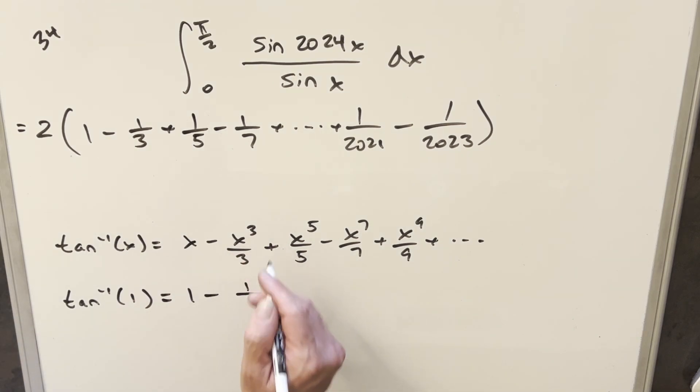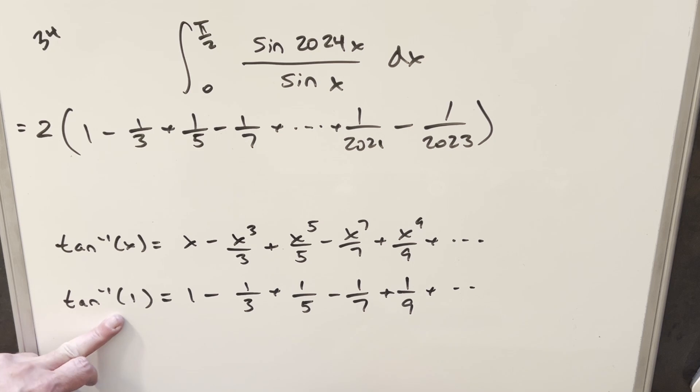All we need to do is, if we just evaluate this at 1 and see what happens, this becomes 1 cubed is just 1. And this is going to be basically what we have up here and the thing we want to find.